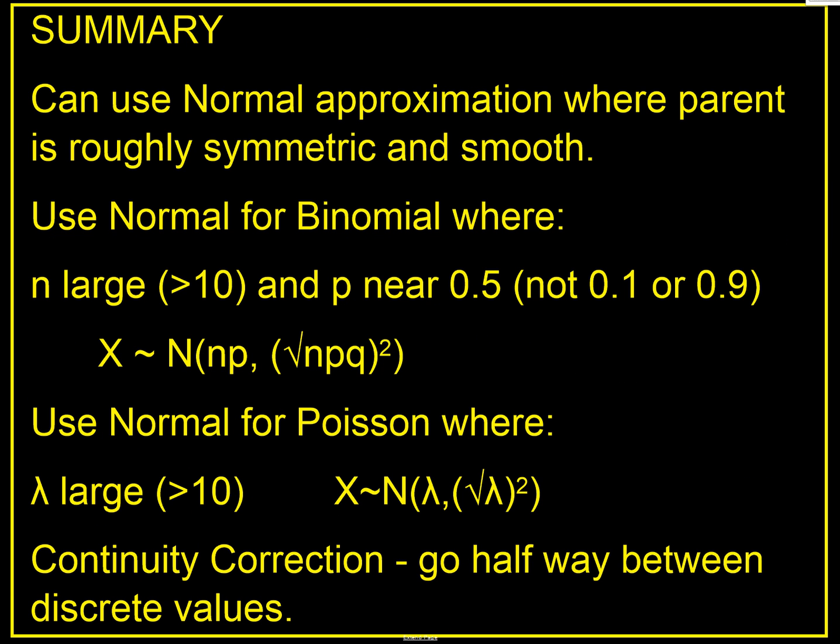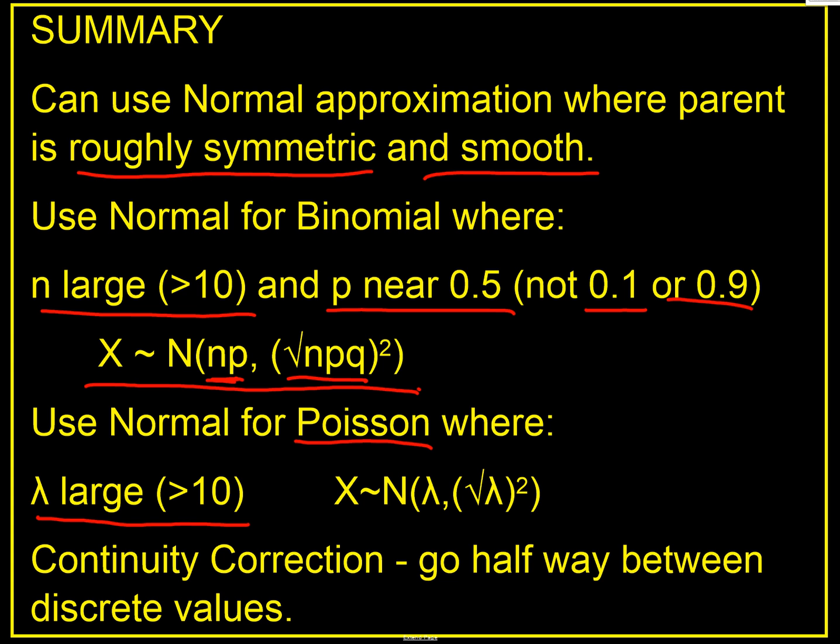And finally, here's my little summary. We can use the normal approximation where the parent is roughly symmetric and smooth. For a binomial, we need our n to be large, greater than 10, and p to be near 0.5, not out there at 0.1 or 0.9. And then we're just going to take our mean and standard deviation for a binomial, np and square root of npq, and use those in our normal. For a Poisson, we need lambda to be large, greater than 10, to give us some resemblance of symmetry. Then our mean is going to be lambda and our standard deviation is going to be the square root of lambda, those are the figures for a Poisson distribution. And continuity correction, remember to go halfway between the discrete values, you're finding the midpoint of the discrete values, and use that as the x value to put into your z and do your calculation. Hope that's of use.